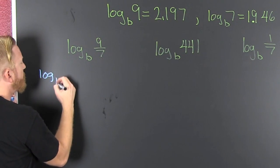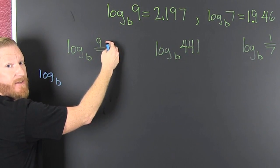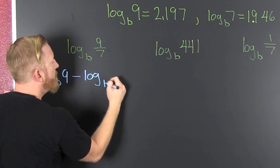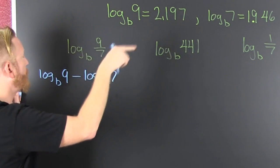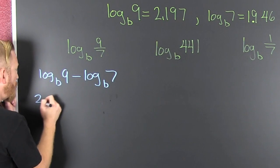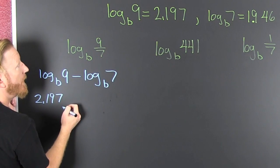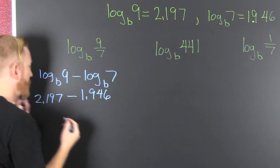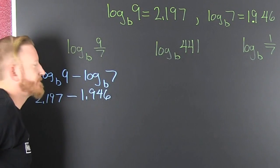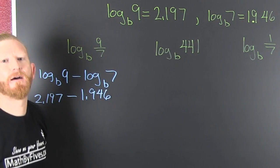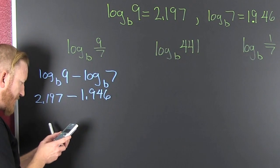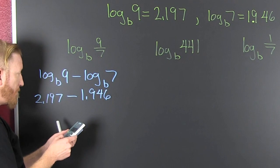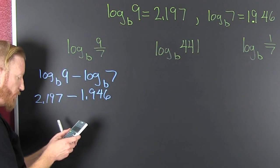This is log base b. The log of the quotient is the difference of logs. So that's 9 minus log base b of 7, then I can plug in a couple of those in there. That's 2.197 minus 1.946. Feeling like such a math god. This is 2.197 minus 1.946.